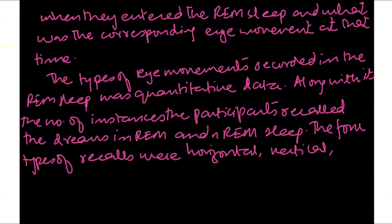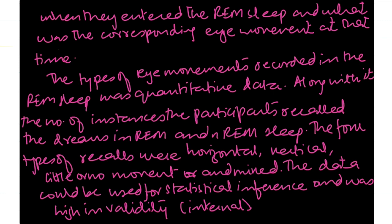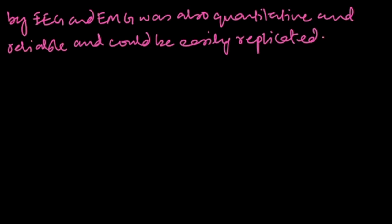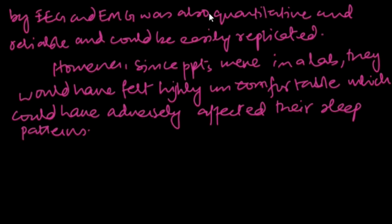Along with it, the number of instances data participants recalled were also quantitative in the REM and the NREM sleep. And the types of recall, the number, the four types of recalls were there. It was also quantitative: the horizontal, vertical, little or no eye movement, and mixed eye movement. Similarly, that data could be used to make further statistical inferences. Similarly, the brain waves and the activity that was taken by the EEG monitor and the EMG was also quantitative and reliable and could easily be replicated.